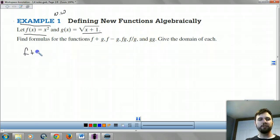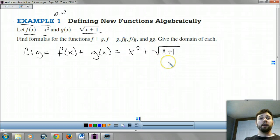So let's look for f plus g. That when you take your f of x plus your g of x, and we get x squared plus square root of x plus 1. And we're done.